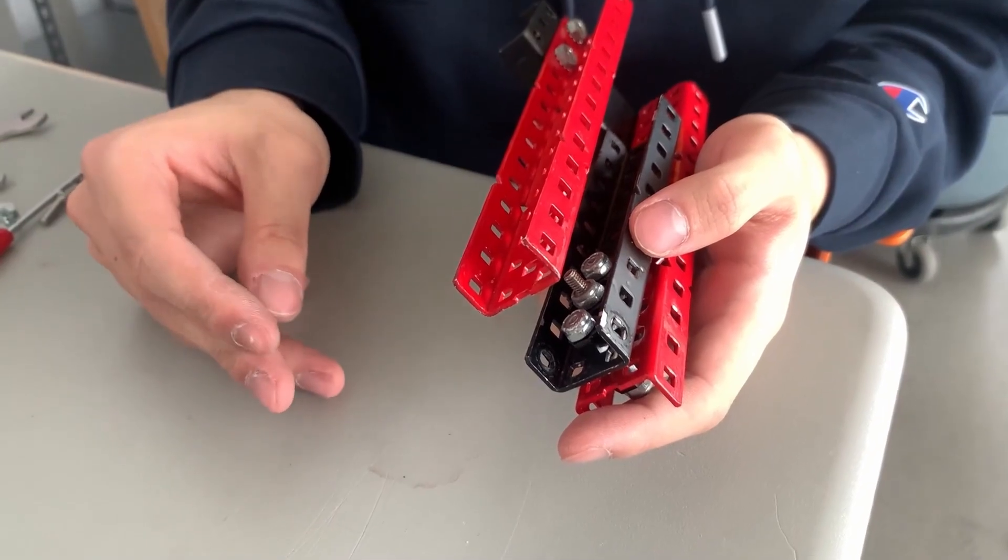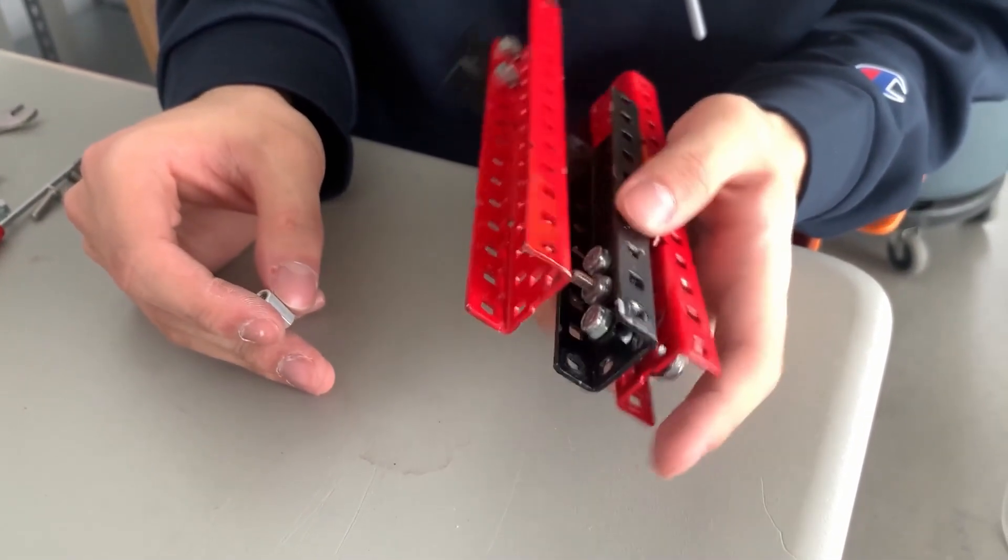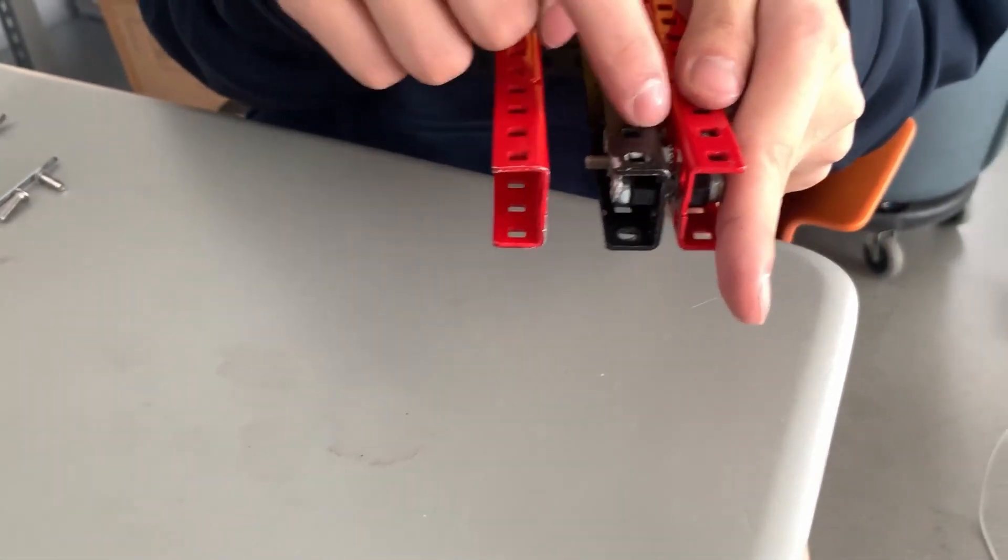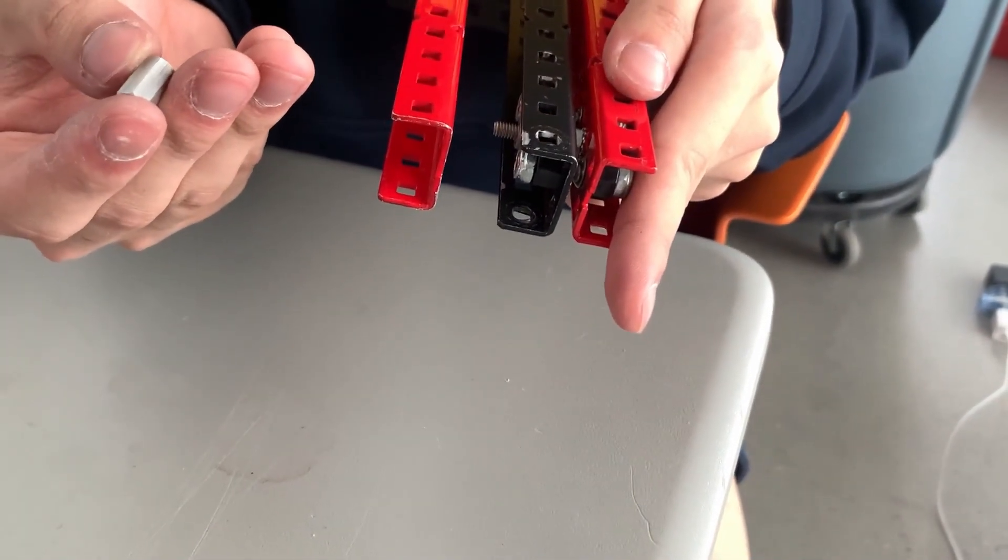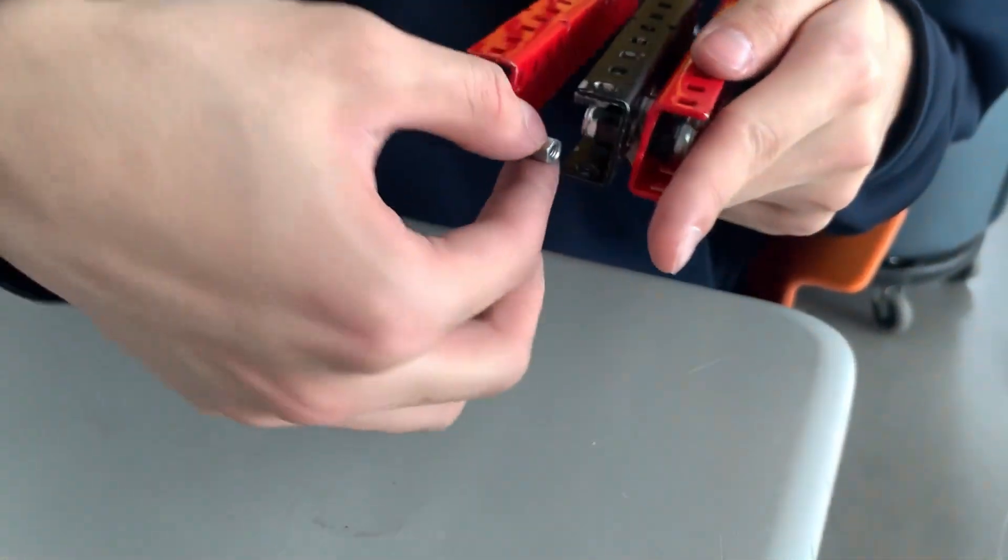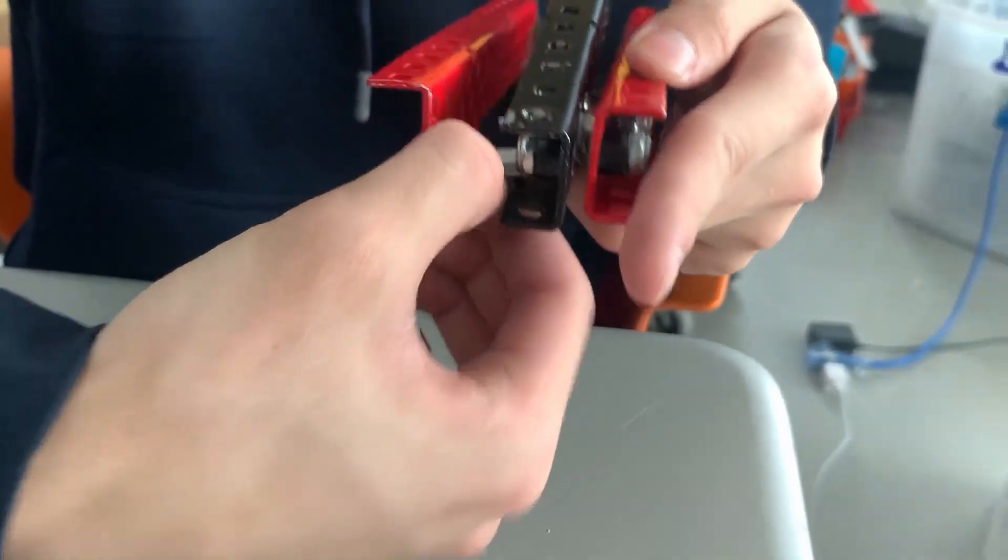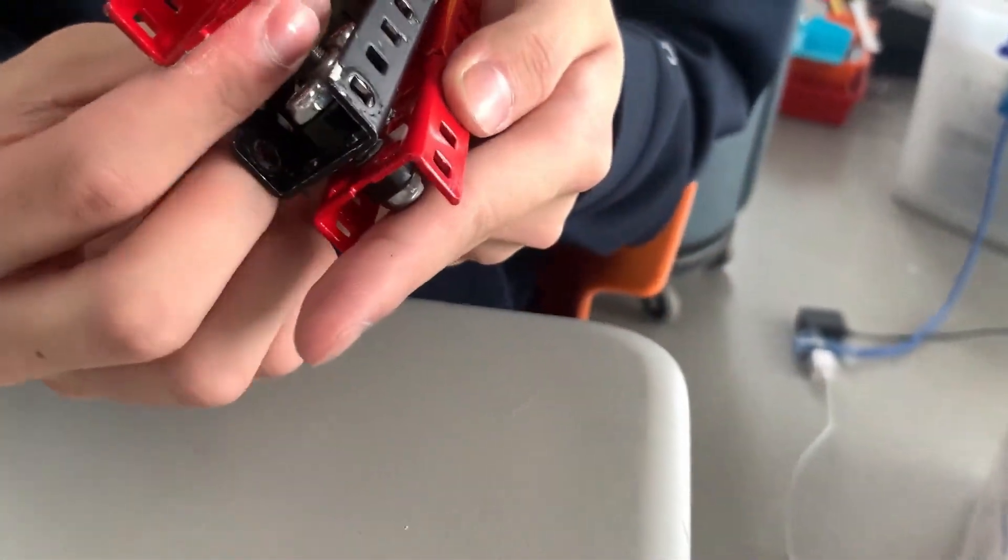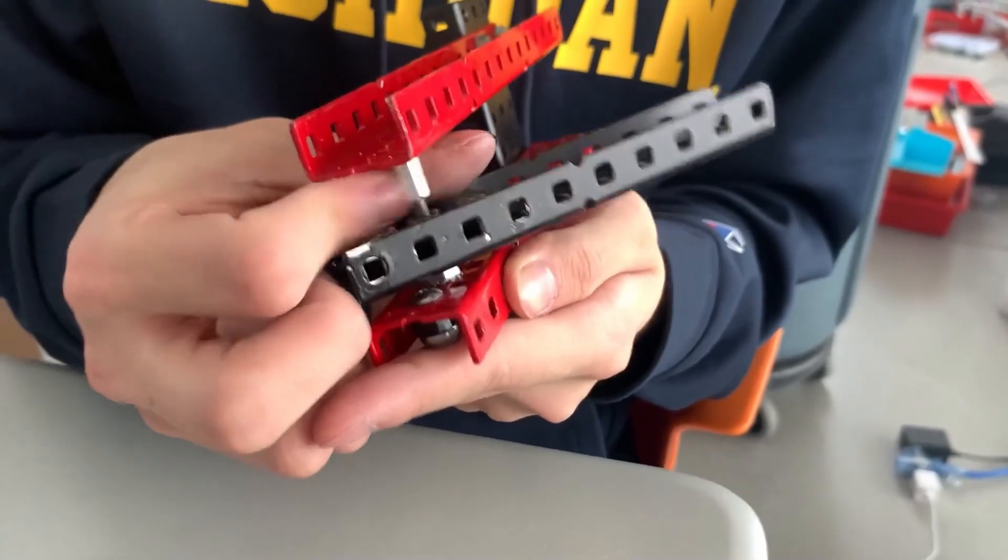Third way of having a screw joint be constrained on both sides is by using standoffs. First, you want to just build a normal screw joint like this. Then you'll want to grab a standoff. The standoff should be as long as this as possible, but I'm just using half inch here for demonstration.